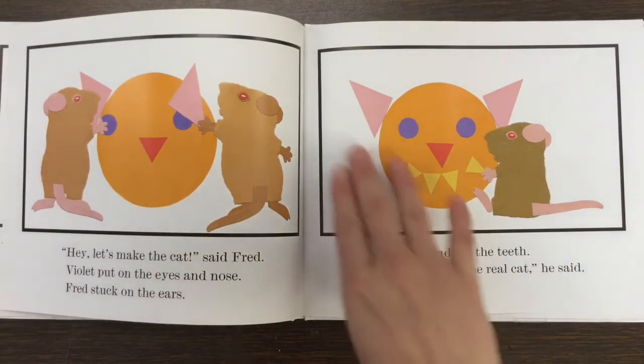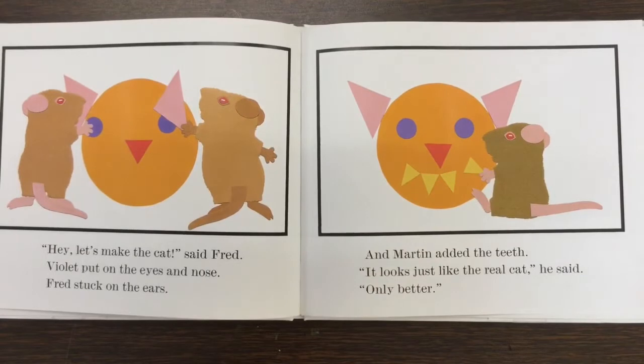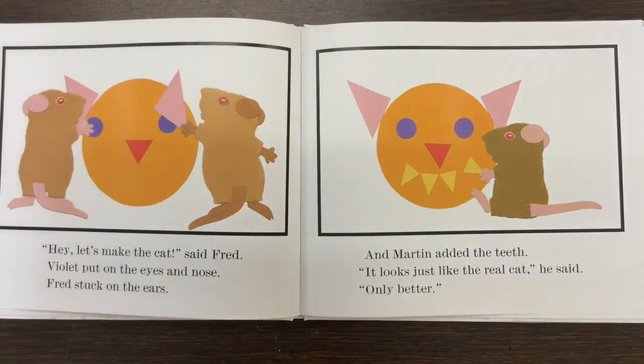Hey, let's make the cat, said Fred. Violet put on the eyes and nose. Fred stuck on the ears. And Martin added the teeth. It looks just like the real cat, he said. Only better.